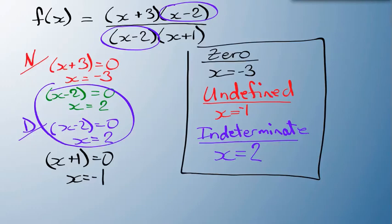Undefined, you look for parts on the bottom that are not repeated on the top. Any time you've got one of those parts equals zero, like this x plus 1, the whole equation is undefined.